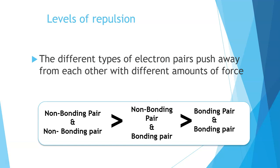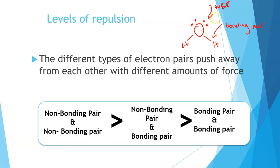The levels of repulsion are defined as follows: a non-bonding pair to non-bonding pair interaction has greater repulsion than a non-bonding pair to bonding pair interaction, which has greater repulsion than a bonding pair to bonding pair interaction. We can consider this in a water molecule because it has all of these interactions present. Each line represents a bonding pair, and the dots represent non-bonding pairs. The repulsion between the two non-bonding pairs is greatest, then non-bonding to bonding pair, and finally bonding pair to bonding pair is least.